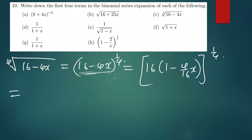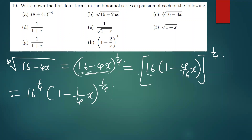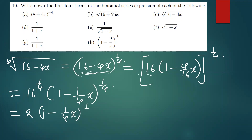We get the fourth root of 16, which is 16 to the power 1 over 4. Then we have open brackets (1 - 4/16 x), which simplifies to (1 - 1/4 x), close brackets to the power 1 over 4. The fourth root of 16 gives us 2, so this becomes 2 times (1 - 1/4 x) to the power 1 over 4.